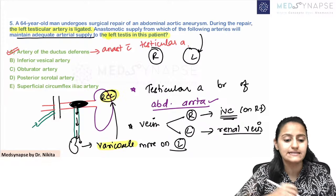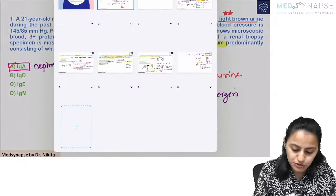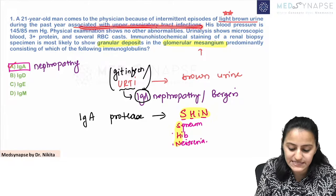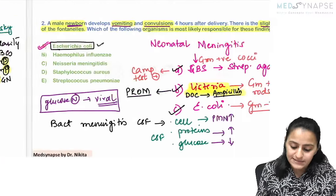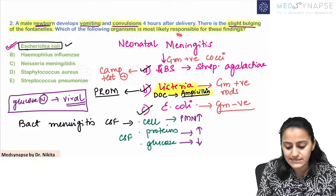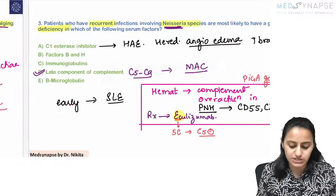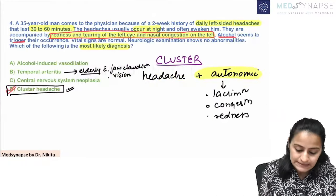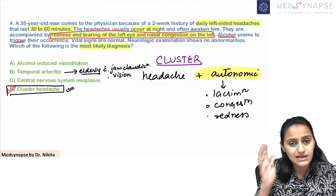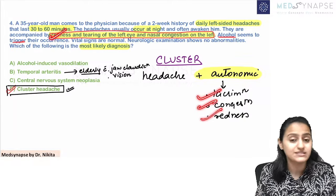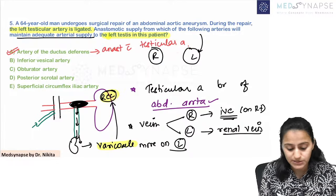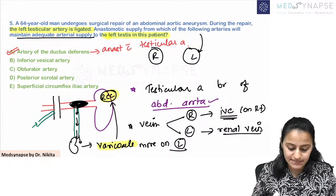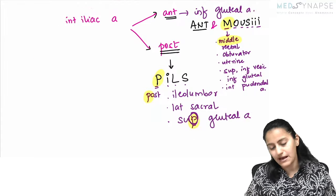Quickly revising the five learning points from today: (1) IgA nephropathy has mesangial deposits — history of URTI then brown-colored urine within two days. (2) E. coli is an important cause of neonatal meningitis — neonate presents with vomiting, convulsions, and bulging fontanel. (3) Late complement deficiency — C5 to C9 — leads to recurrent Neisseria infections. (4) Cluster headache: cluster of headache plus autonomic symptoms, unilateral in a young male awakening from sleep with lacrimation, congestion, and redness. (5) The artery anastomosing with the testicular artery is the artery of the ductus deferens.